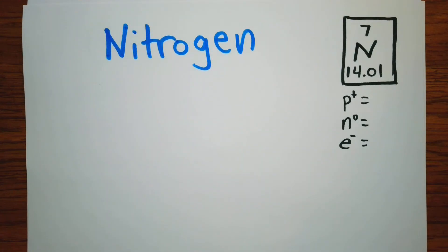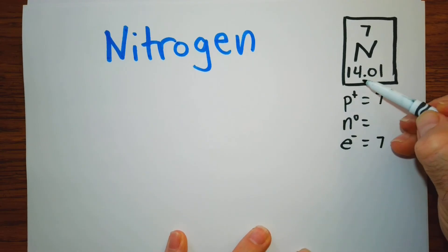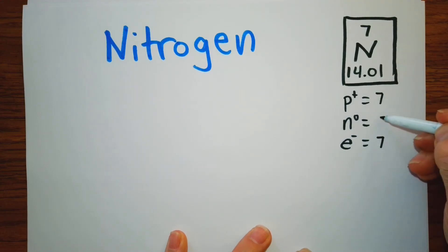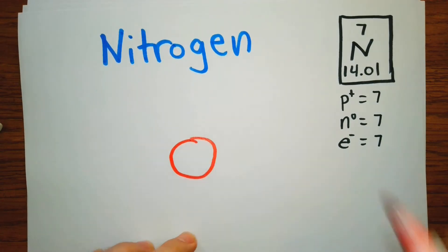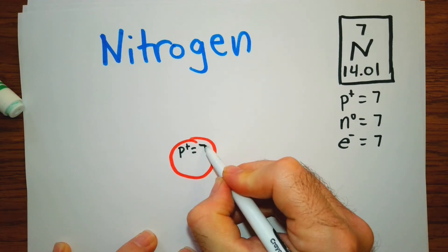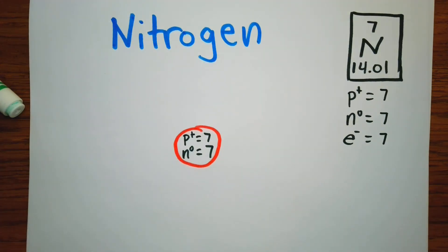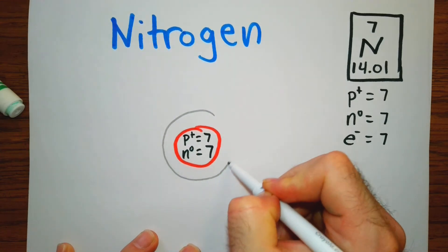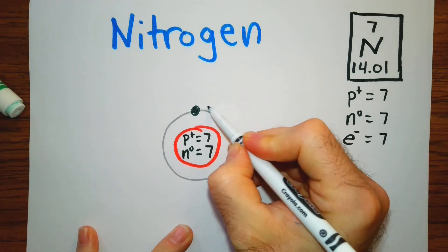Nitrogen: looking at our periodic table square, we have seven protons, which means seven electrons. We do 14.01 minus seven, round it, and that gives us seven neutrons. So we have a total of seven electrons to place. Let's draw our nucleus with protons equal to seven and neutrons equal to seven. Our first orbital has a maximum of two electrons, and these pair because only two electrons can go there.